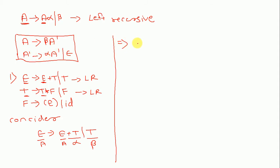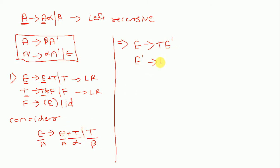Applying the formula: A is E, alpha is plus T, beta is T. So E gives β E-dash, meaning E gives T E-dash. And E-dash gives alpha A-dash slash epsilon, that is E-dash gives plus T E-dash slash epsilon.